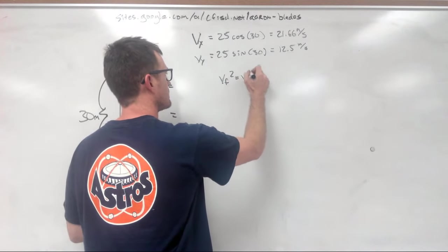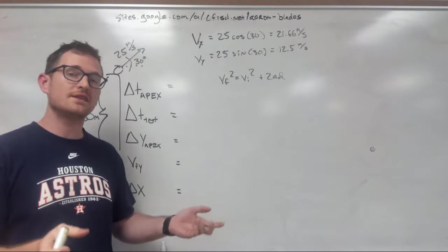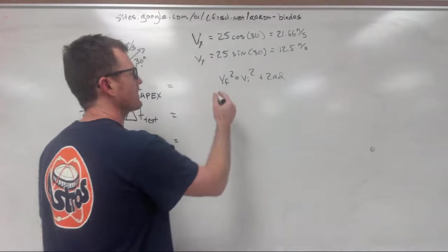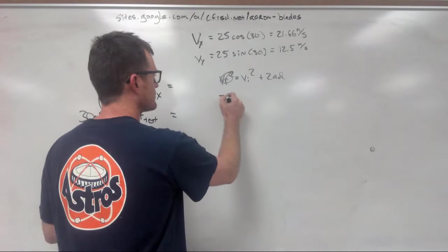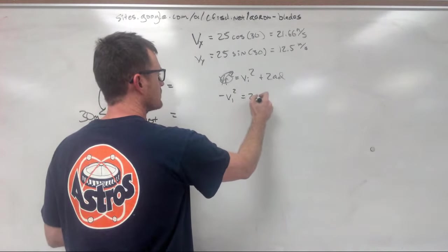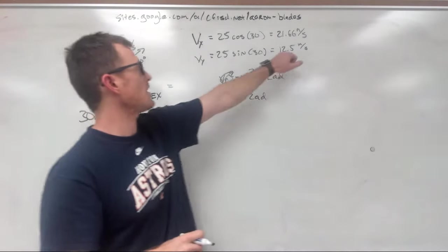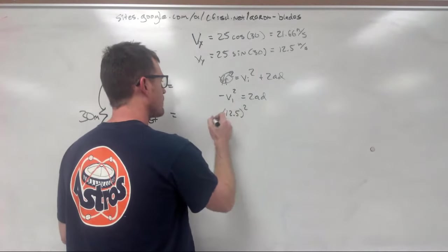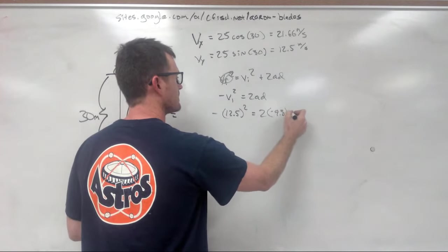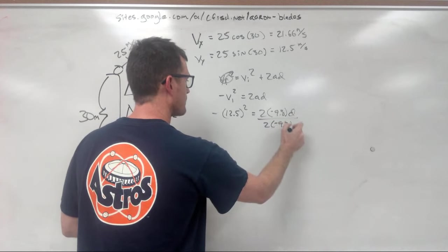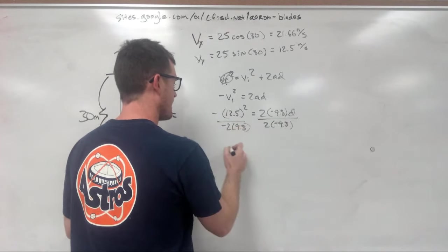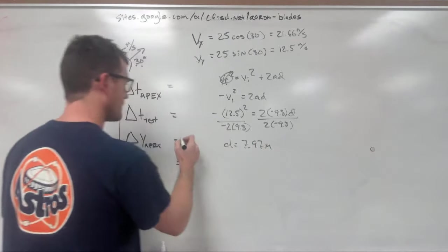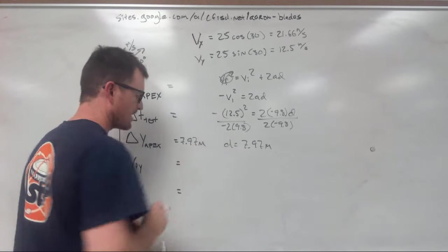When an object flies up and begins to turn around when it hits its apex, it will stop for just a moment. It will slow and then stop at that apex and then turn around and come back. So at our apex, our final velocity in the Y direction is going to be zero. That leaves us with negative Vi squared equals 2A times D. This Vi is equal to our Vy over here. That's how fast it was launched in the upward direction. So 12.5 squared negative equals 2 times negative 9.8 times whatever our distance is. Let's divide both sides by 2 times negative 9.8. And we end up with our delta D is equal to 7.97 meters.